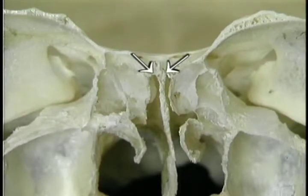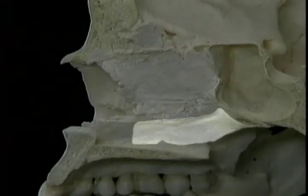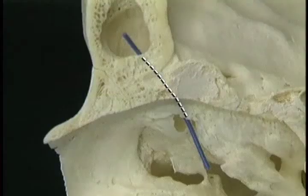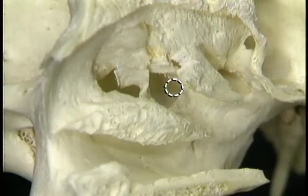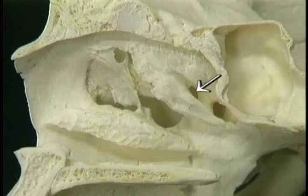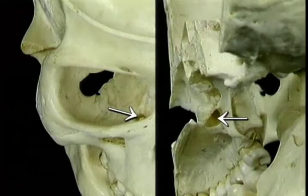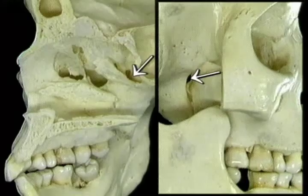Here are the cribriform plates, the uncinate process, and the vomer. Here are the frontonasal duct and the openings for the maxillary sinus, the sphenoid sinus, and the ethmoid air cells — posterior and anterior. Here are the openings for the nasolacrimal duct and the sphenopalatine foramen.